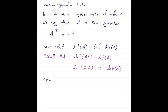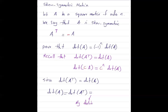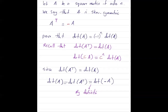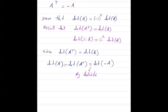Since the determinant of the transpose of A is equal to the determinant of A, and at the same time the determinant of A can be written as the determinant of its transpose, by the definition of a skew-symmetric matrix it is equal to the determinant of minus A. Following the property, C is equal to negative 1, so this can be written as the determinant of negative 1 times A.